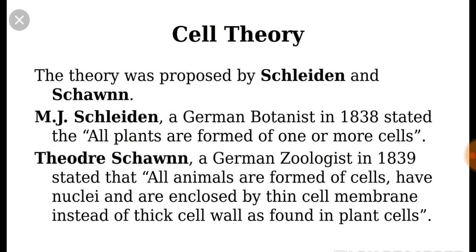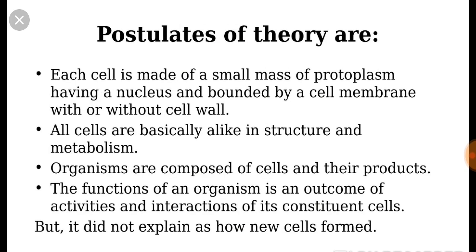The postulates of the cell theory: each cell is made of a small mass of protoplasm having a nucleus and bounded by a cell membrane without a cell wall. All cells are basically alike in structure and metabolism. Organisms are composed of cells and their products, and the function of an organism is an outcome of the activities and interactions of its constituent cells.